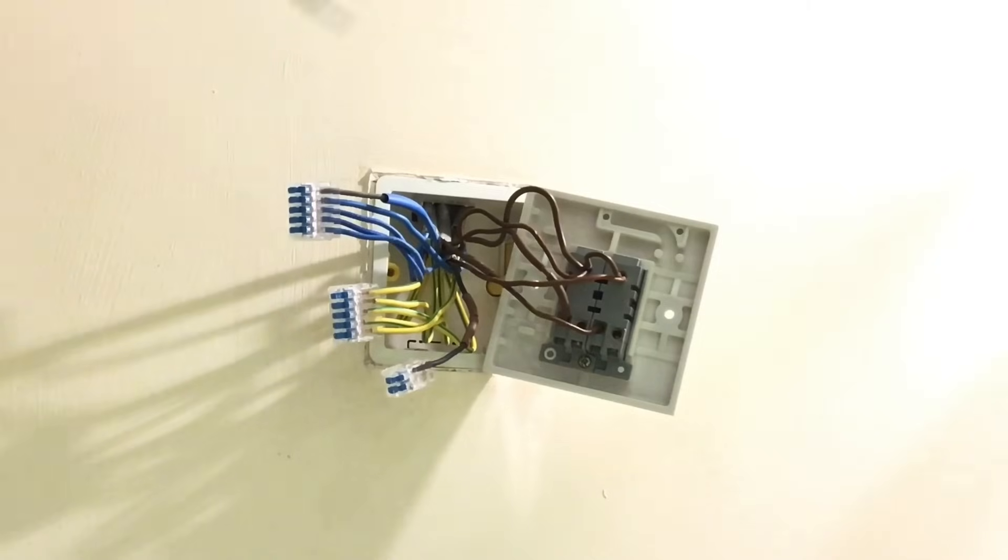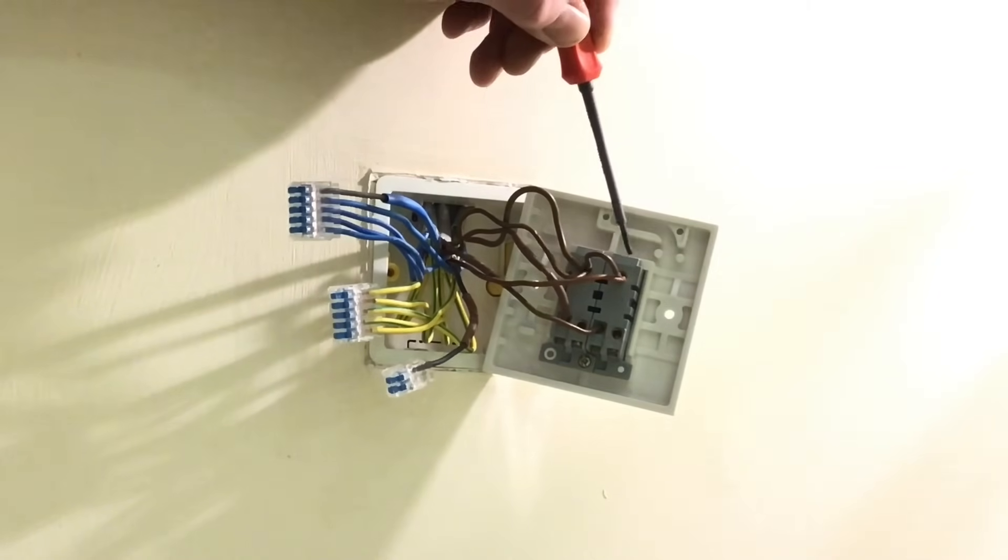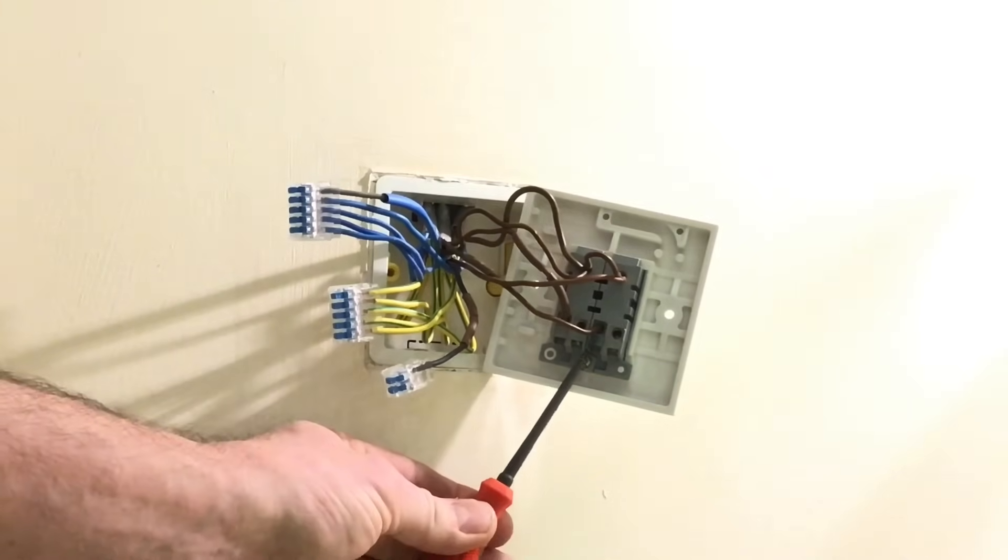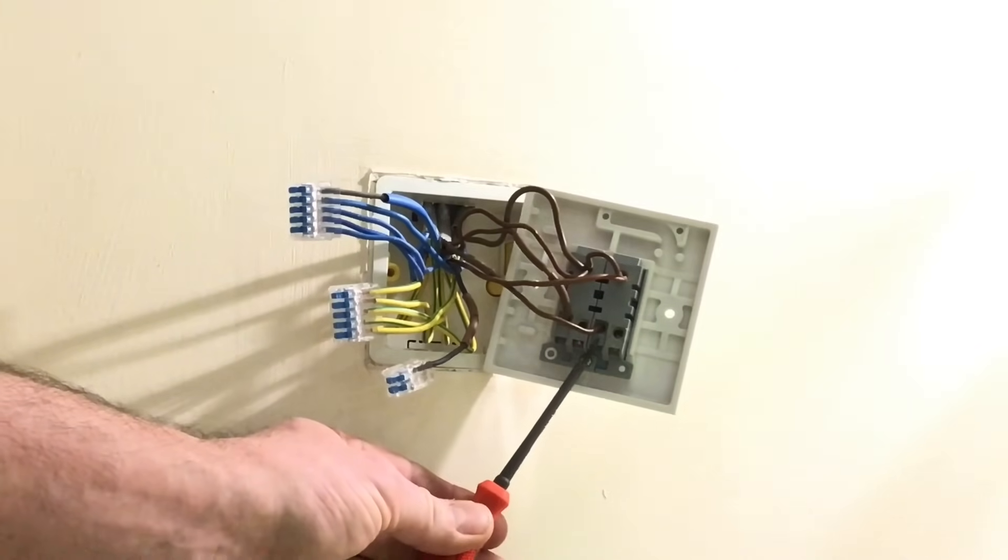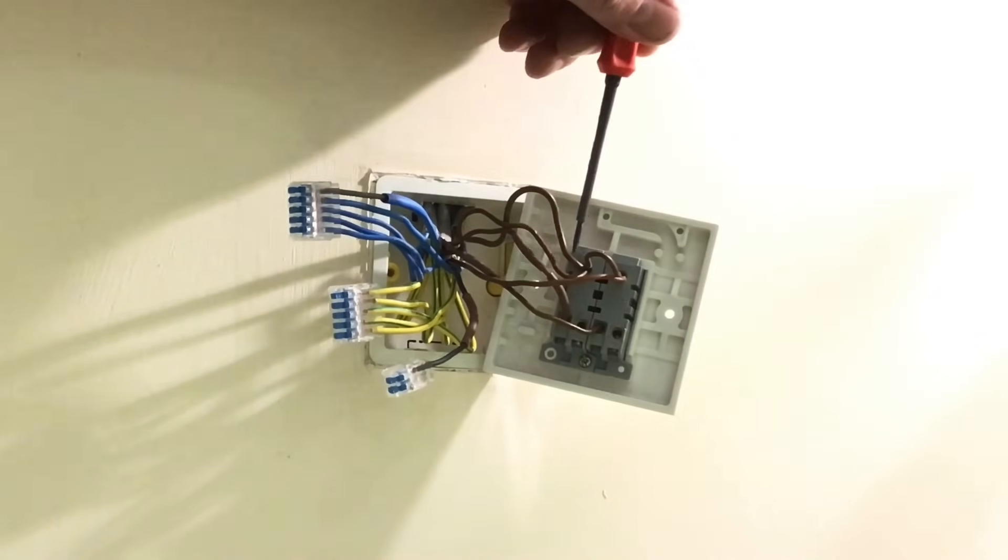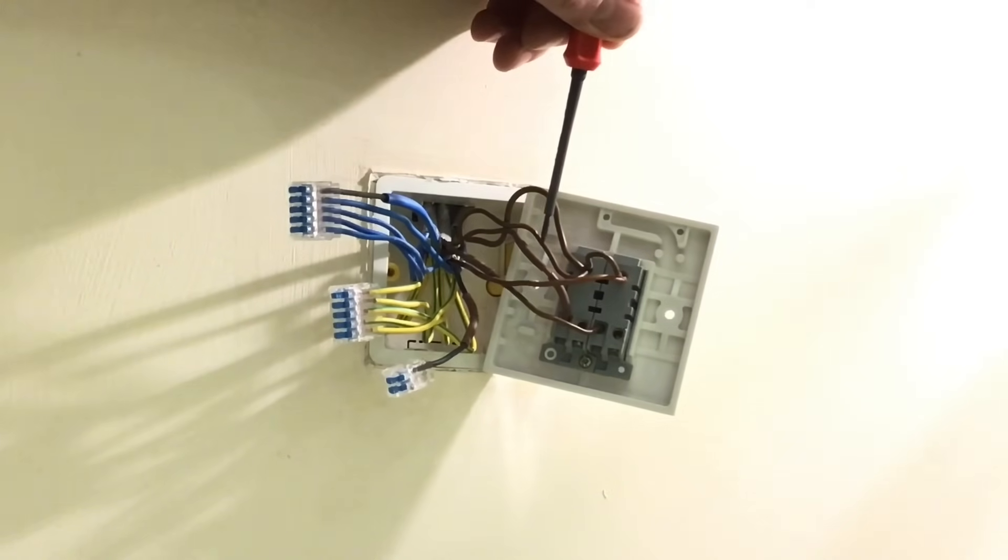Just to recap then, the feed comes into the switch and is terminated into the common. The permanent feed is looped across to the other common, of which there are two switching lines coming out, one for the spotlights, one for the pelmet lights. We've picked up from the same position here a permanent line to a 5 amp socket outlet for a TV, and a permanent line that goes across in a 3 core cable to feed another switch.